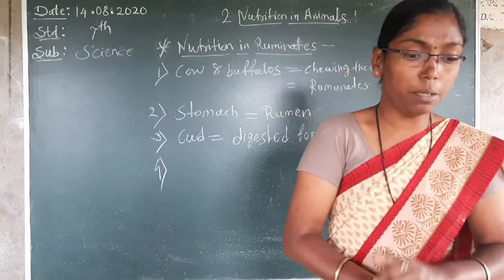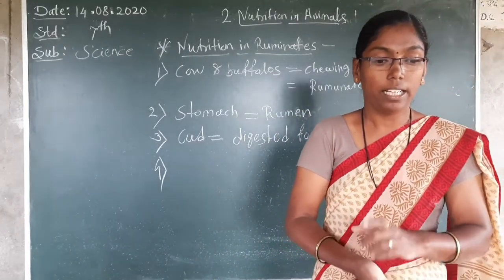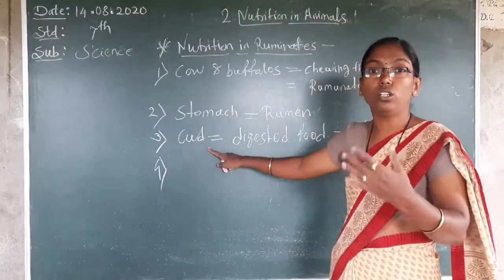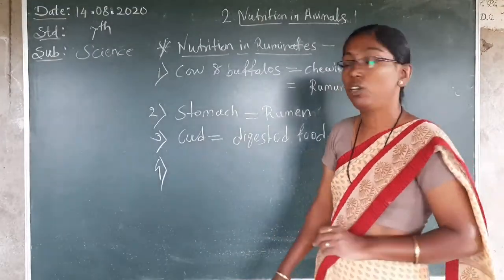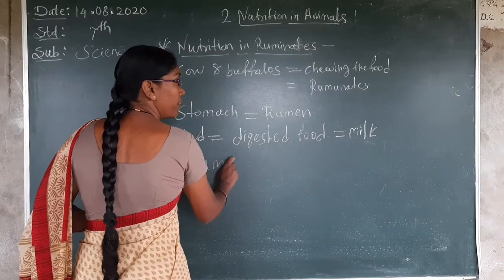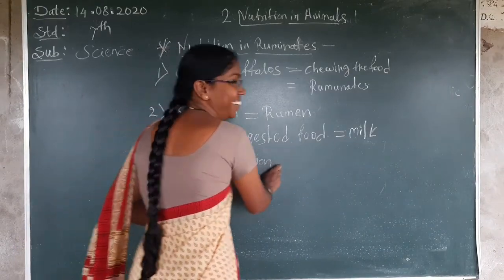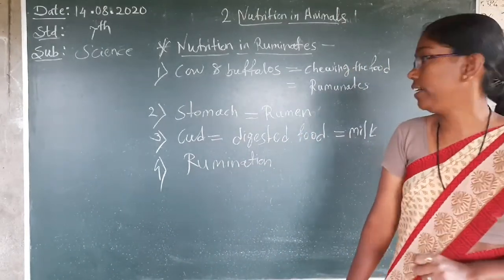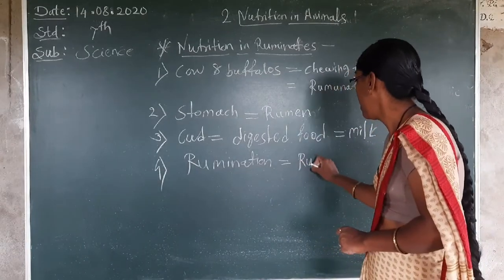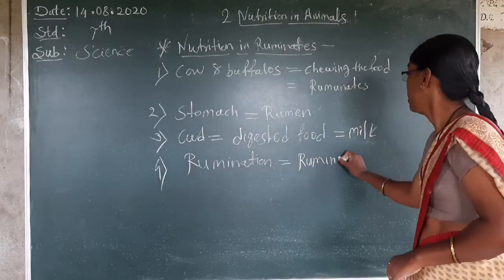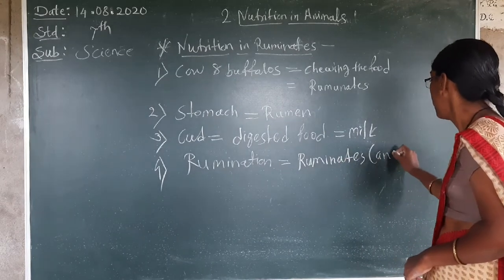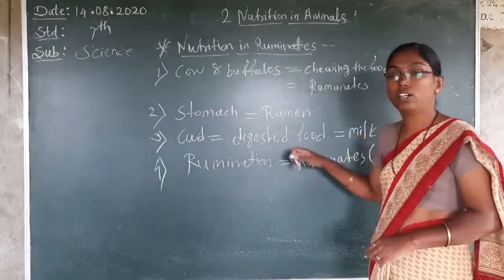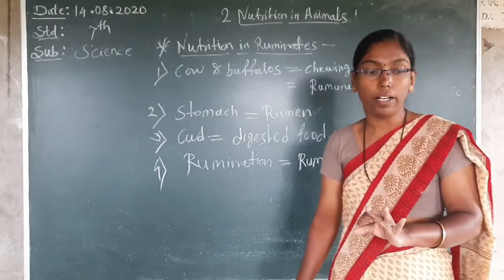Fourth point: these animals have the ability to bring the cud back into the mouth and continue chewing. This process is called rumination. The cud continues to be chewed — this process is called rumination. And the animal that does this is called a ruminant. Don't forget.